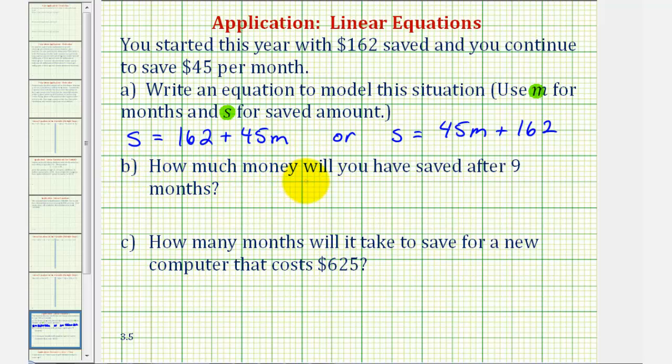Part B, how much money will you have saved after nine months? So we can use our equation here and substitute nine for M to determine the amount saved after nine months.